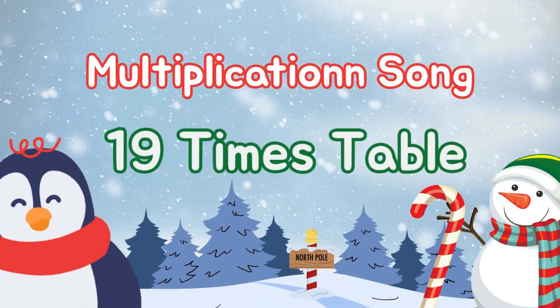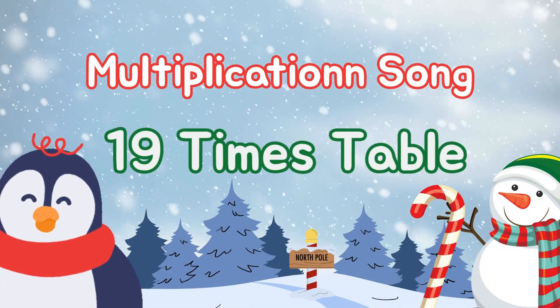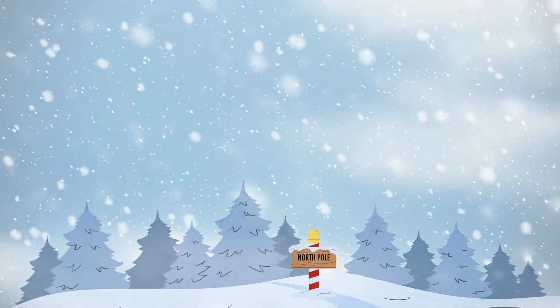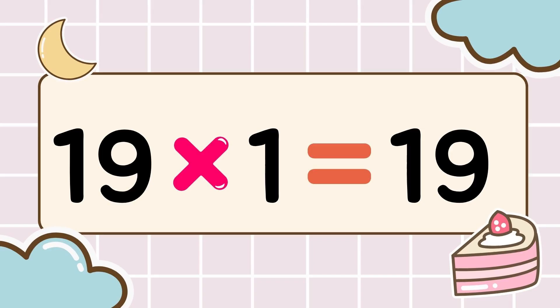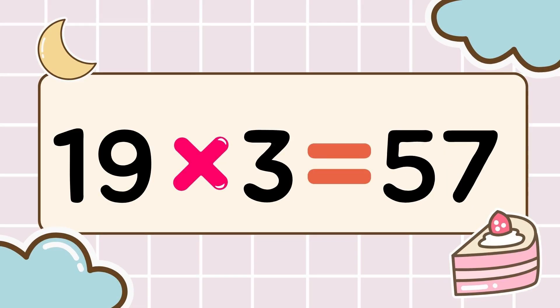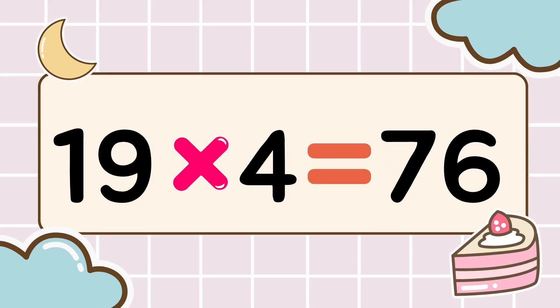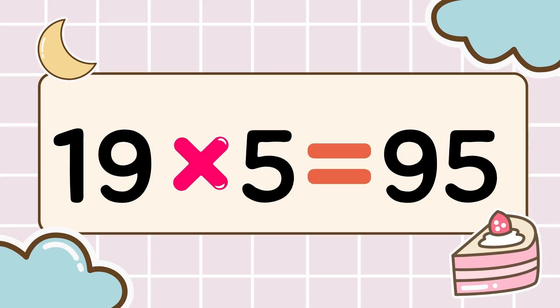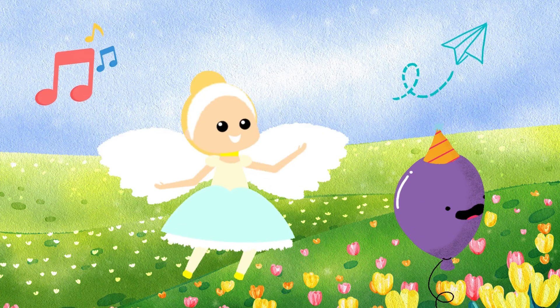Math time! Let's multiply! Let's have fun while we memorize. 3, 2, 1, go! 19 times 1 is 19, 19 times 2 is 38, 19 times 3 is 57, 19 times 4 is 76, 19 times 5 is 95. Awesome!